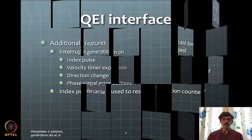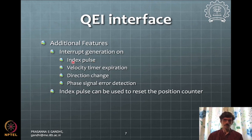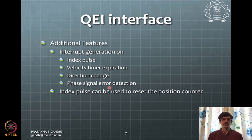Additional features include interrupt generation — on index pulse, which is useful for resetting encoder value or homing a robot on power-up; after velocity timer expiration; and on direction change or phase signal error. These interrupt facilities can be used to halt an application or take corrective action as needed.